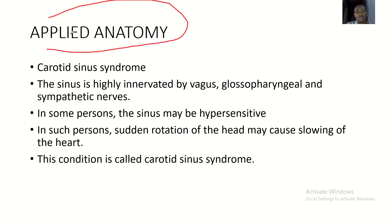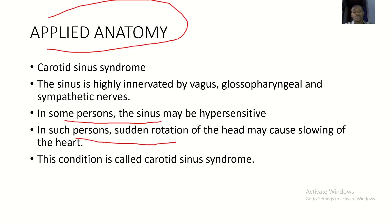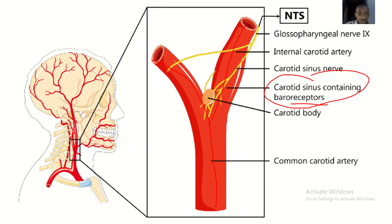The applied anatomy of the carotid sinus is the carotid sinus syndrome — that's when it becomes hypersensitive. In some persons, the sinus may be hypersensitive, and in such persons, sudden rotation of the head may cause slowing of the heart. The reason it is rotation of the head is because the carotid sinus is located in the neck, so rotating puts pressure on the carotid sinus.